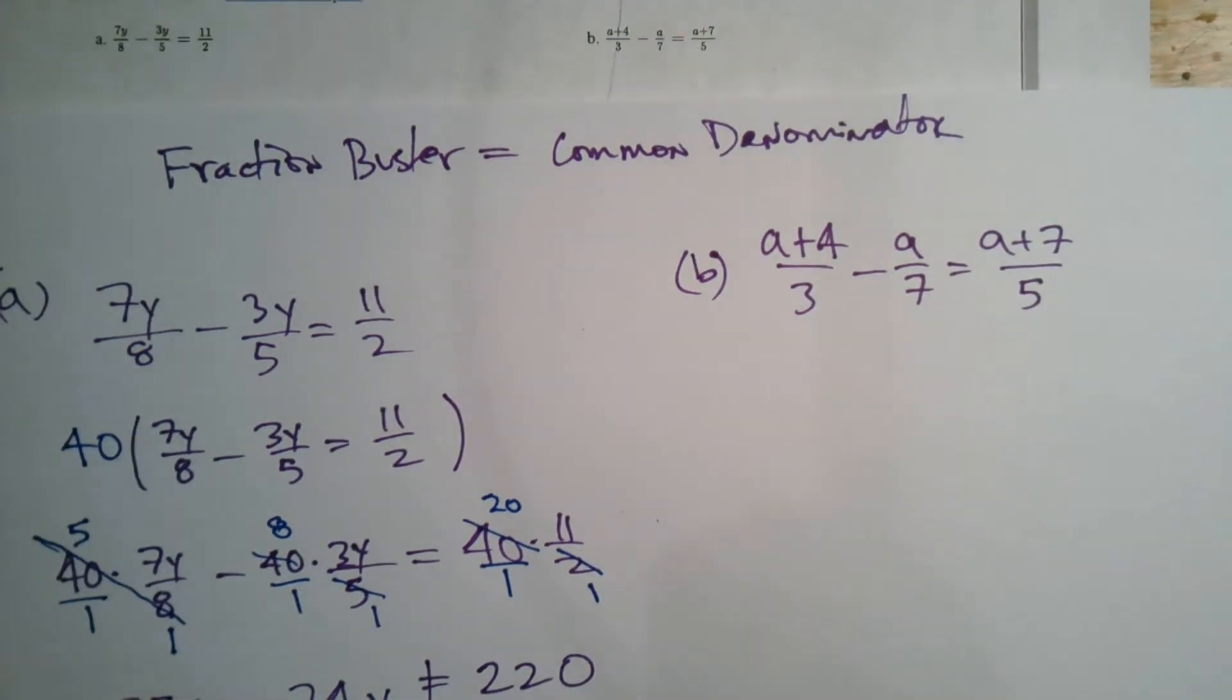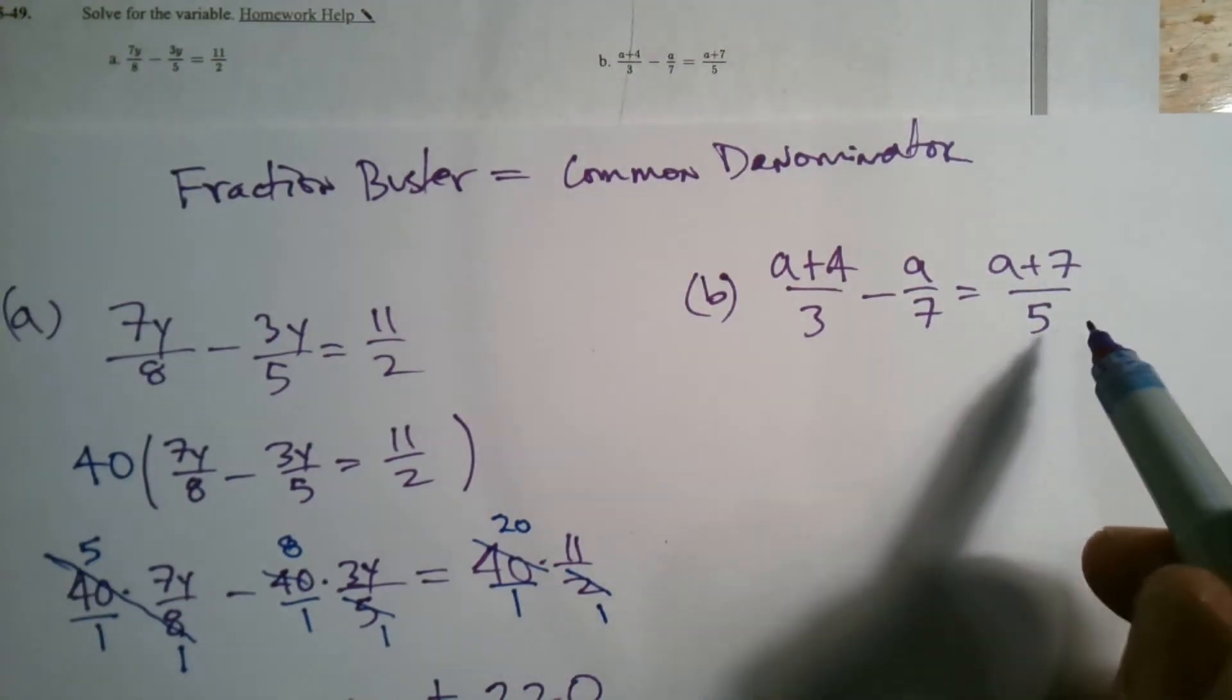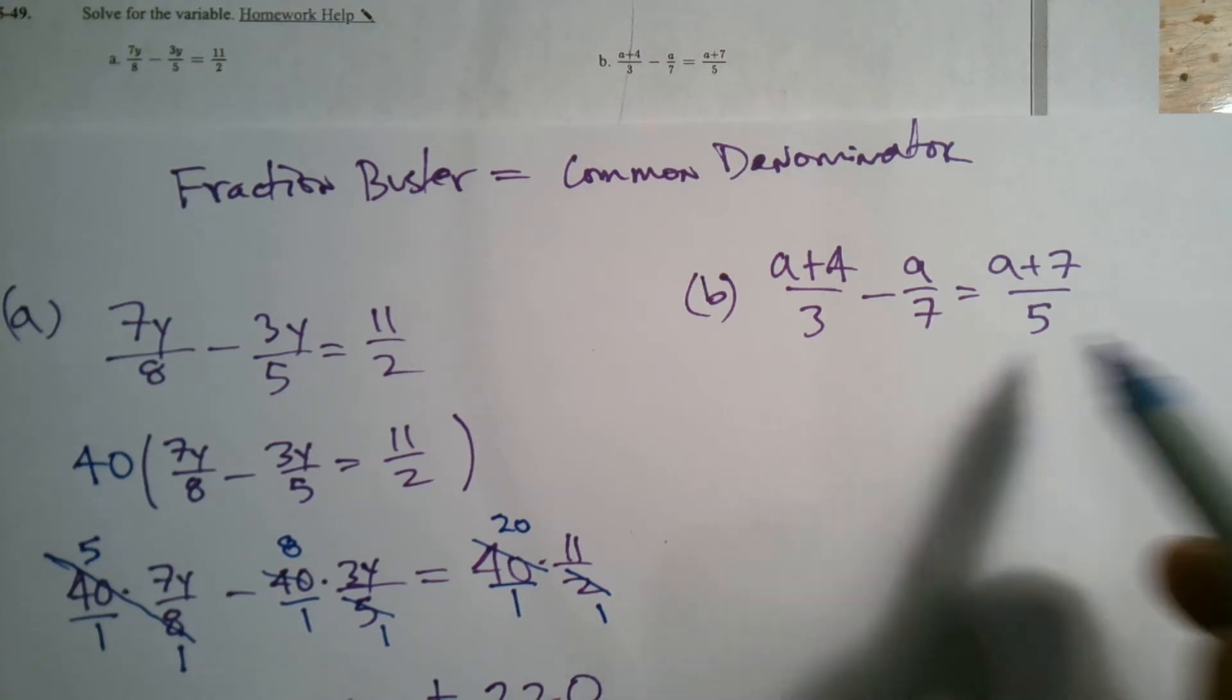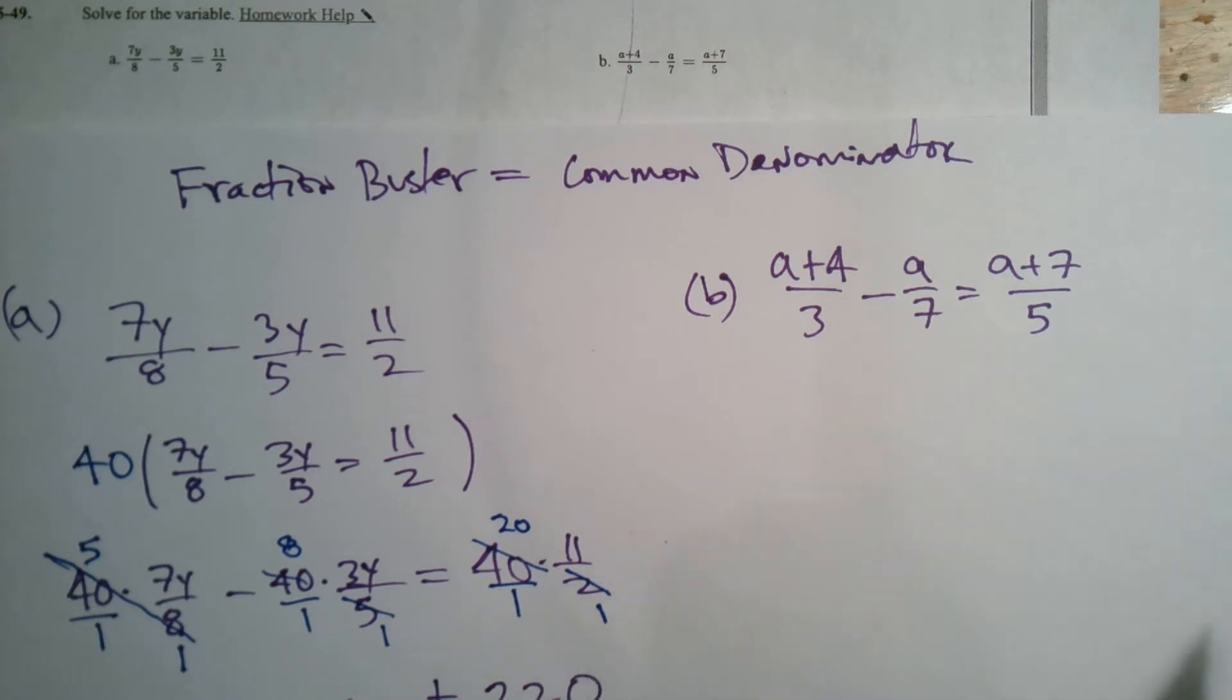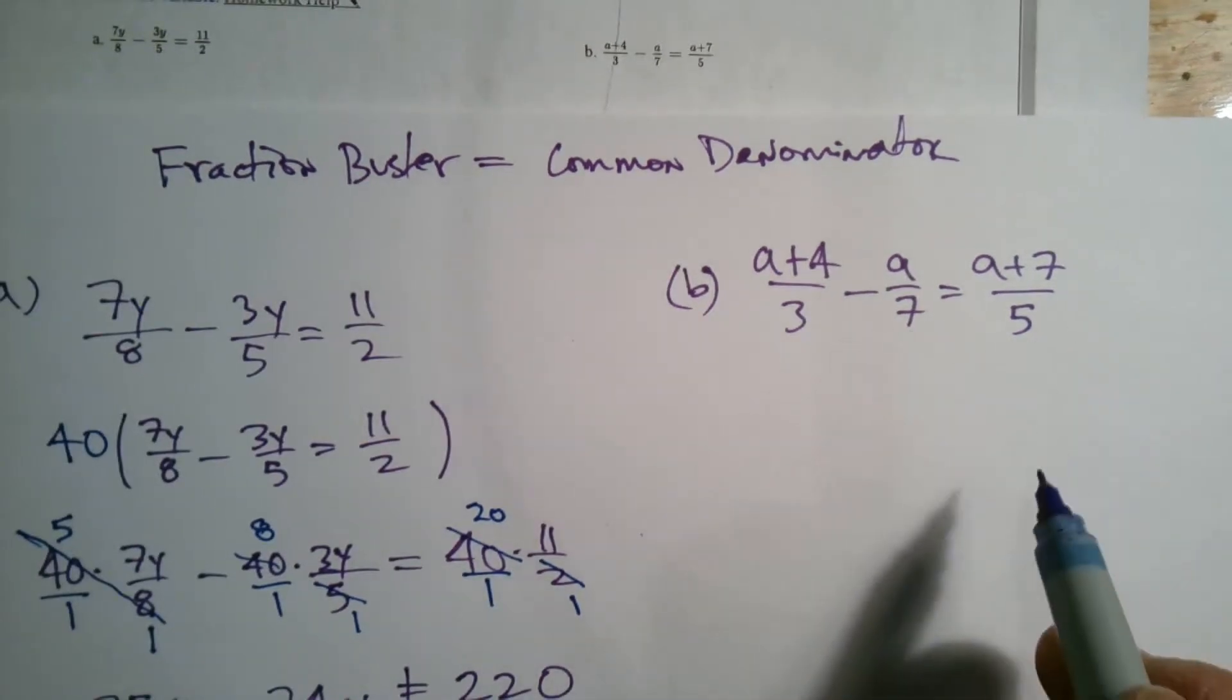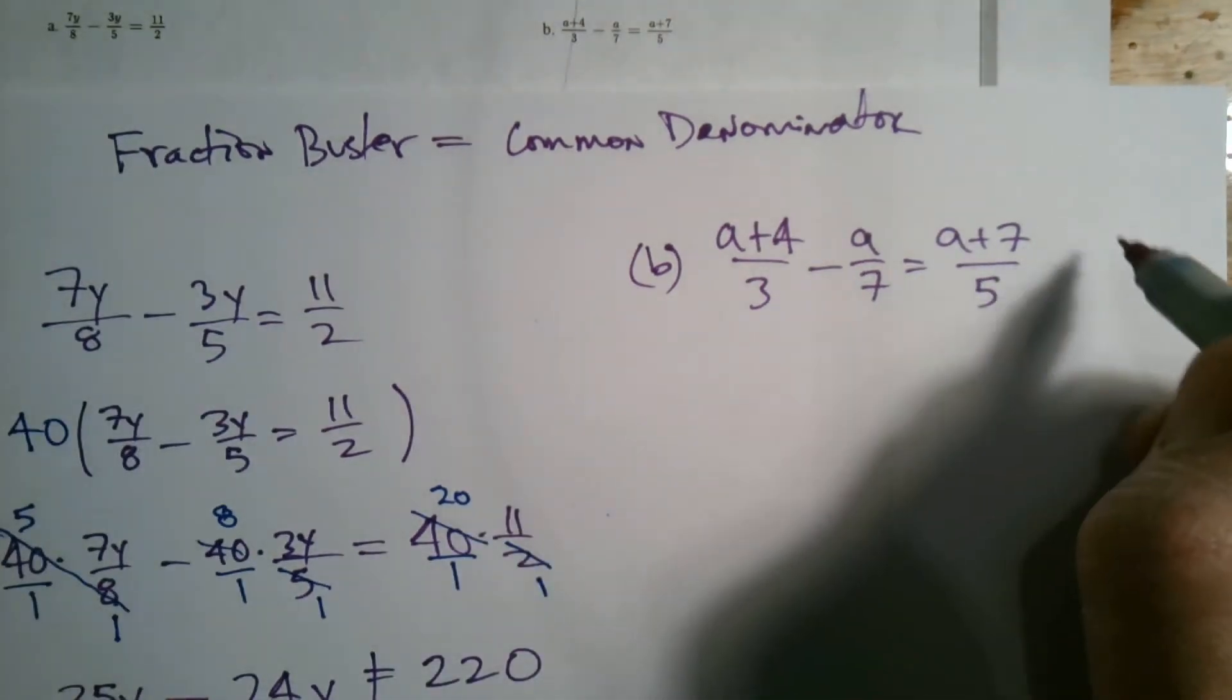So once again, fraction buster is what? A common denominator. So here's my denominators: 3, 7, and 5. So what number does 3, 7, and 5 go into? Well, they're all prime numbers. Another trick to doing this, to finding the common denominator, is to look to see what we've got. In this case I've got all prime numbers - 3, 7, and 5 are all prime.